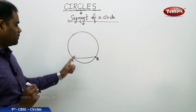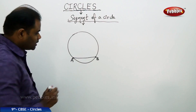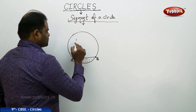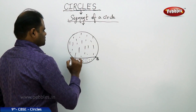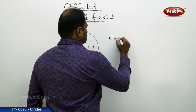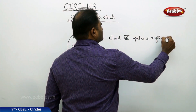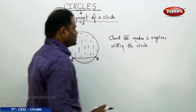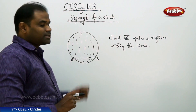Now clearly, when I draw the chord in the circle, I always have two regions made by the circle. So when I draw the chord, I have two regions made within the circle. There are two regions made by chord AB — this is region 1 and this is region 2.